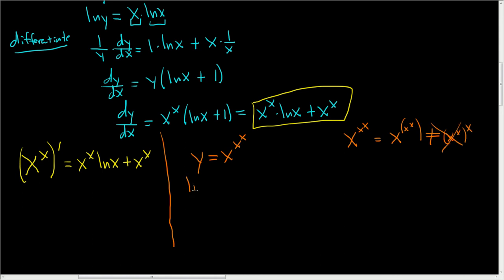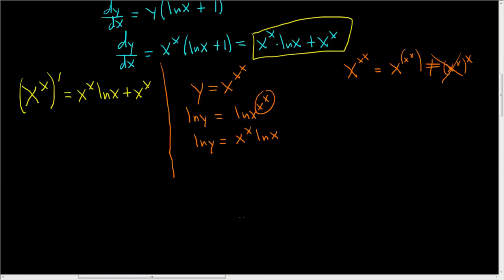To do this derivative, it's the same approach — we'll take the natural log of both sides. So the natural log of y equals, you bring down the x to the x, so you get x to the x times the natural log of x. And as before, we will take the derivative of both sides with respect to x, giving 1 over y times dy/dx on the left.